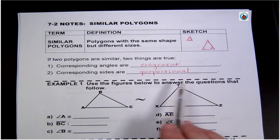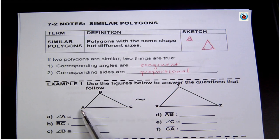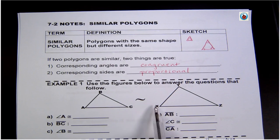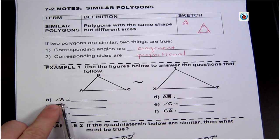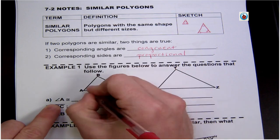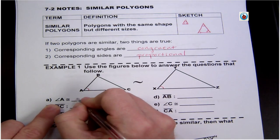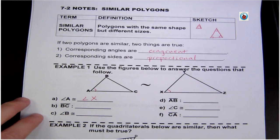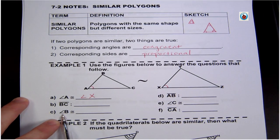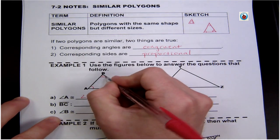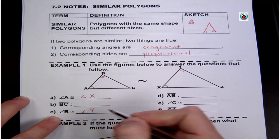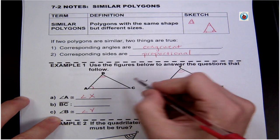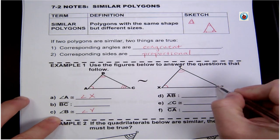In our example, we use the figures below to answer the questions. Triangle ABC is similar to triangle XYZ — that's what the tilde means. We're going to name the corresponding parts. The corresponding angles are congruent, so angle A is congruent to angle X. Angle B — the one at the tippy top — is congruent to angle Y.